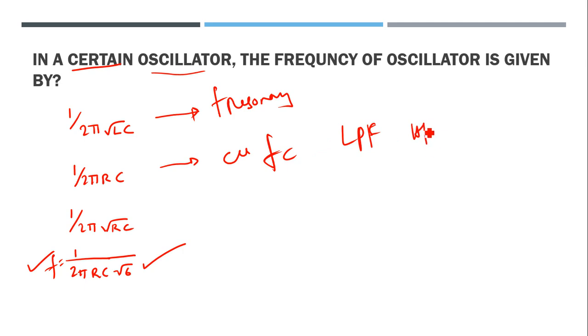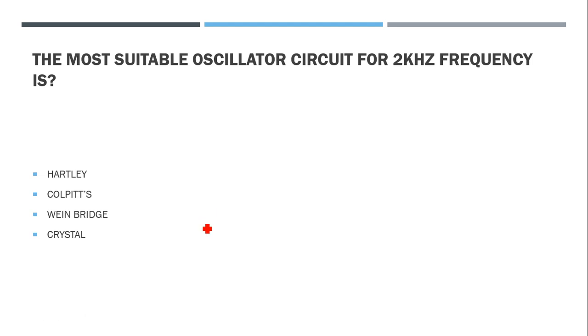Low-pass and high-pass filters use R and C. For high-pass filter, just reverse the components. The cutoff frequency is one by 2 pi RC. So the right answer for certain oscillators is f equals 1 by 2 pi RC root of 6.